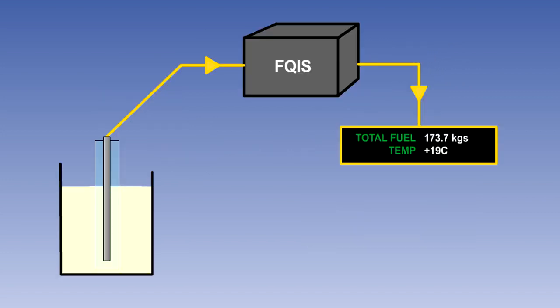On more modern aircraft, the digital gauges are controlled by a fuel quantity indicating system or FQIS computer. This computer monitors the system for any failures and generates appropriate warnings.